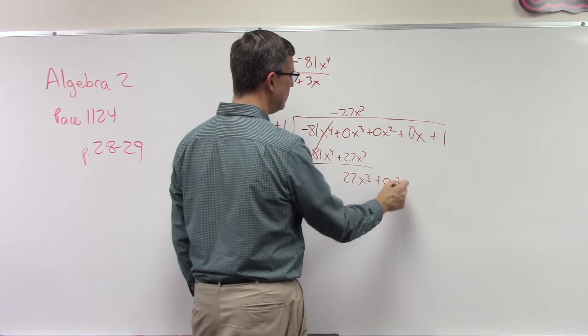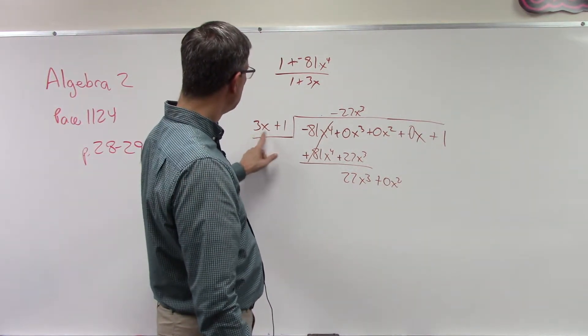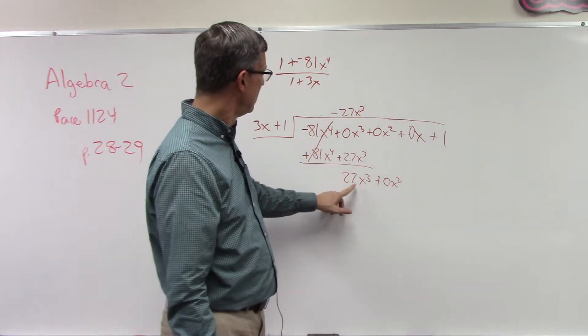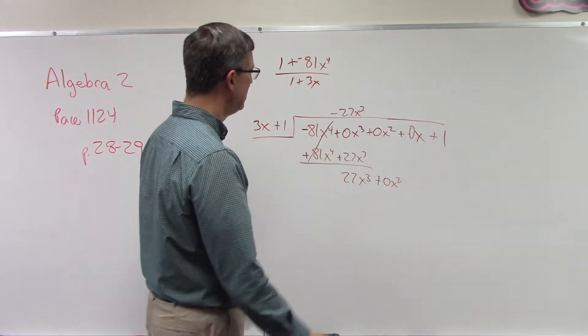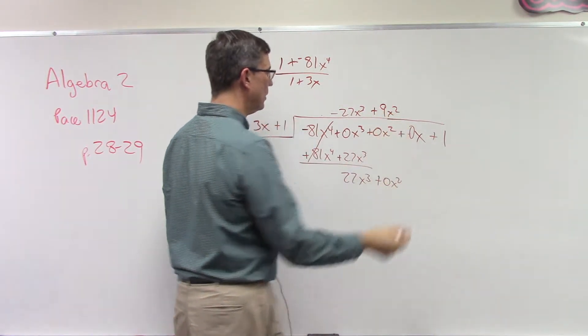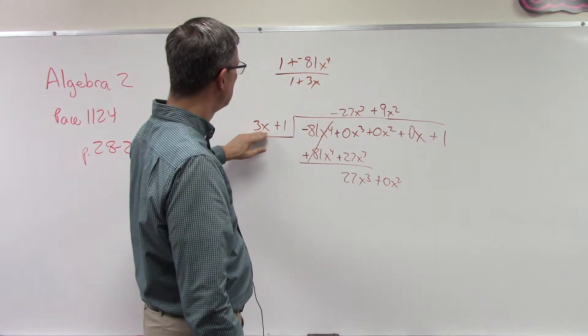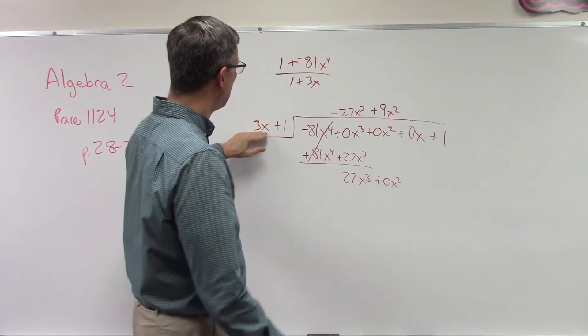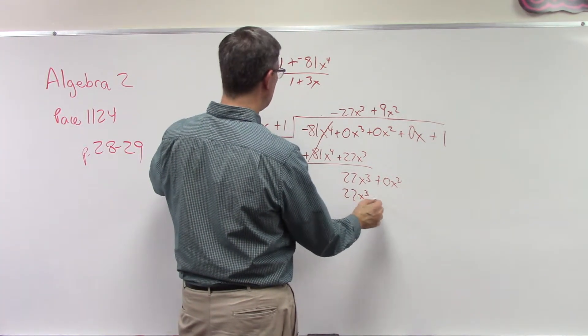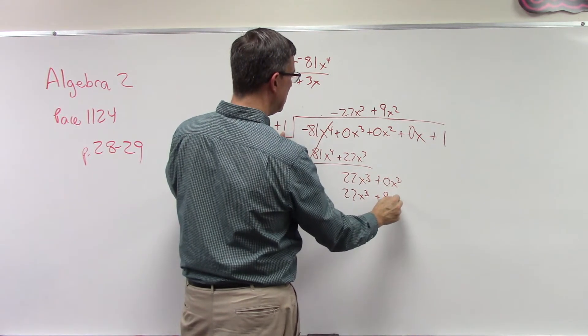What do we get here? 27x to the third. I'll go ahead and bring down the next term which is 0x squared. 3x divides into 27x to the third how many times? Well 27 divided by 3 is 9 and I'm going to have x squared. Let's check it out, let's multiply this times this.